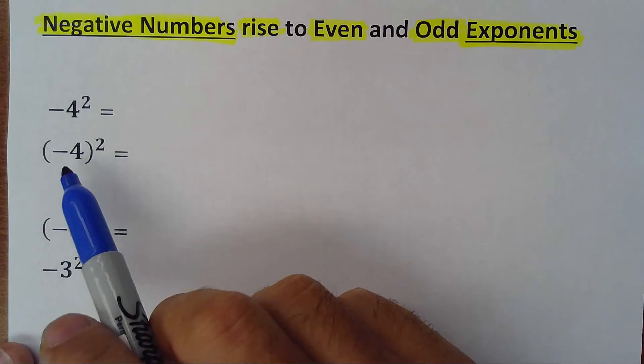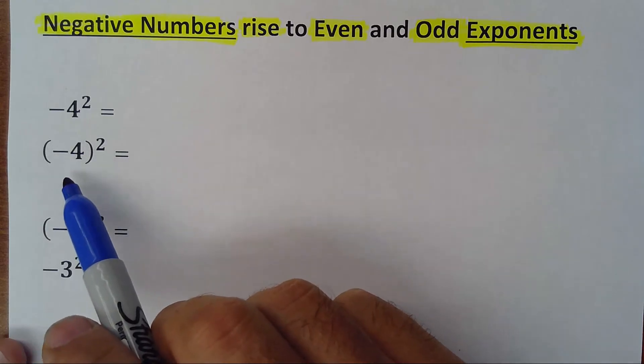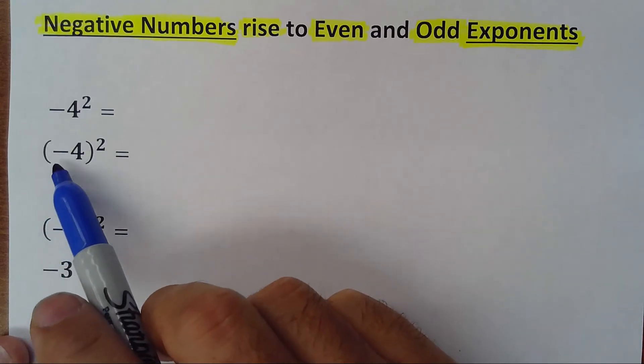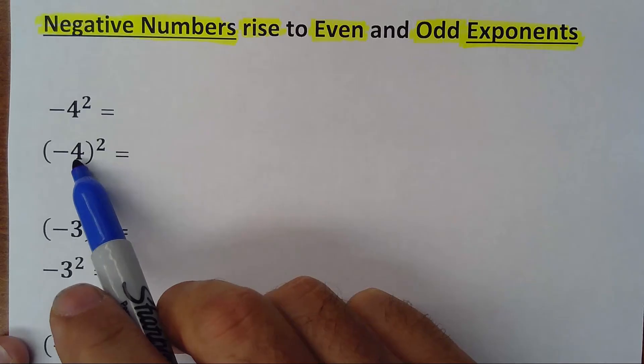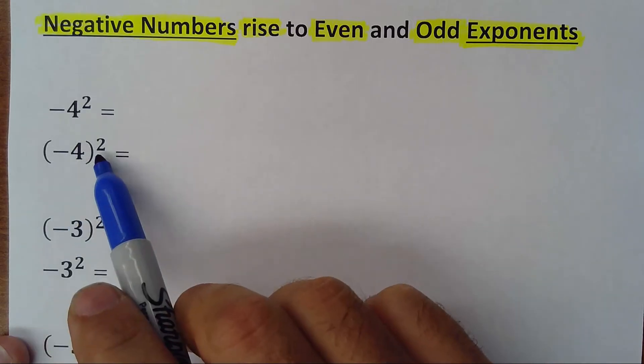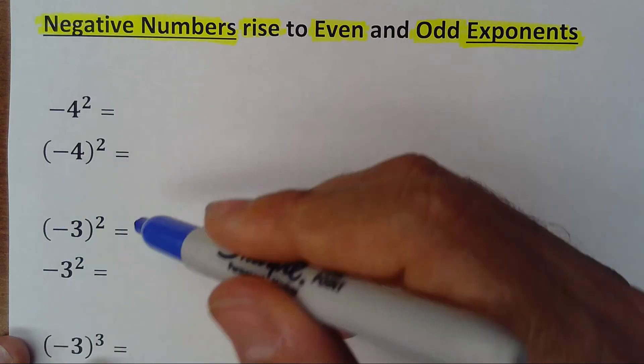So, it looks like those two are the same, but they are not. Negative 4 inside of parenthesis raised to the second power, that would be equal 16 positive.